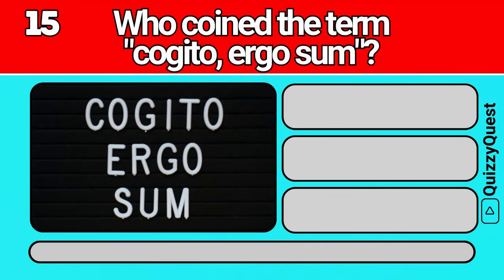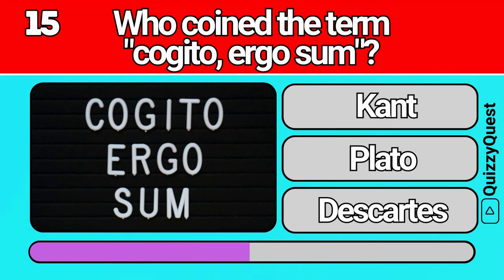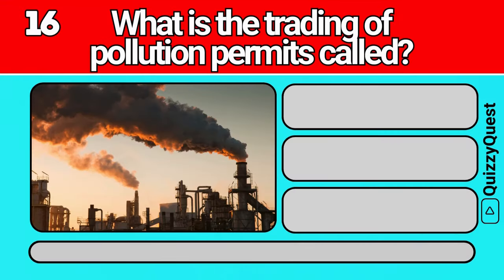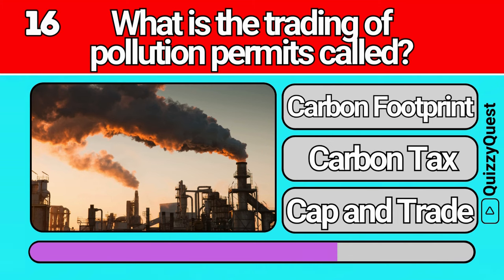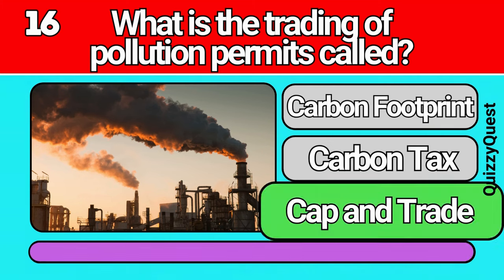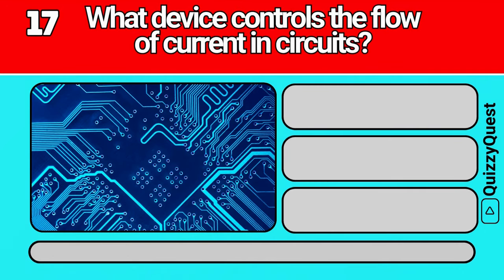Who coined the term cogito ergo sum? What is the trading of pollution permits called? What device controls the flow of current in circuits?